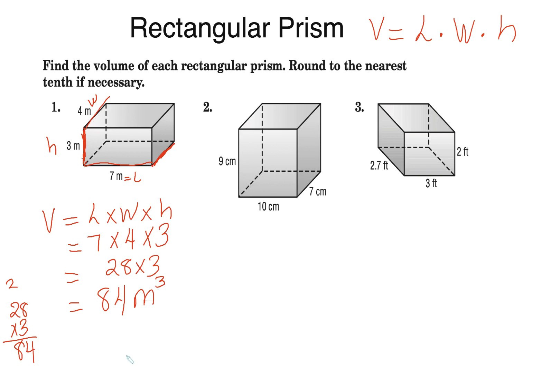We have another rectangular prism here. We need to find the volume. Volume equals length times width times height. Here's my length which is 10. Here's my width which is 7. And here is my height which is 9. 10 times 7 is 70. And then I'm going to times that by 9. 9 times 0 is 0. And 9 times 7 is 63. Our dimensions are centimeters and it will be cubic centimeters. So just put the little three there.